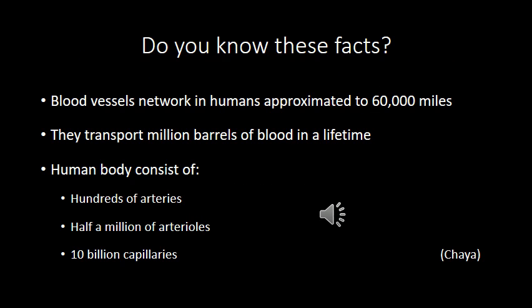It is very interesting to know that the length of the whole network of blood vessels in humans is approximated to be about 60,000 miles. This is just an estimation. These blood vessels transport millions of barrels of blood in a lifetime, and the human body consists of hundreds of arteries, about half a million arterioles, and about 10 billion capillaries.